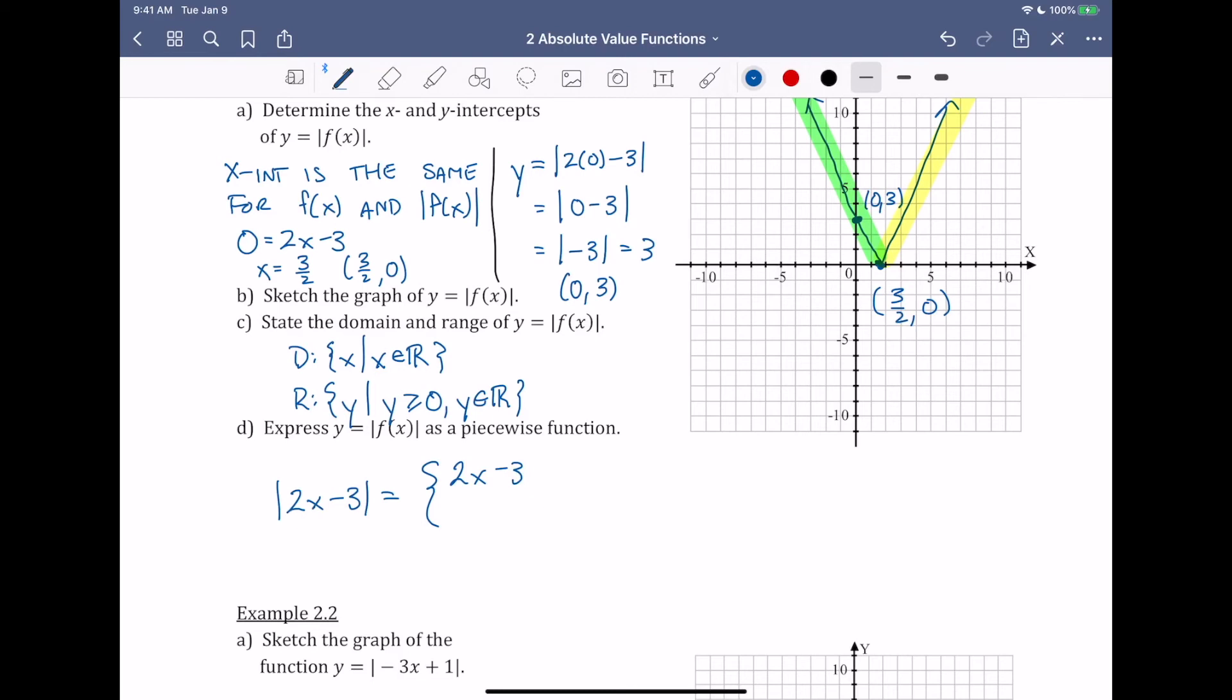When we're describing absolute value as a piecewise function, there's two options. We either had the original function be positive, in which case we keep it, and that's what we're doing here with the 2x - 3. Or it's negative, and we're taking the negative of that to make it a positive value, and that's what we're doing here.